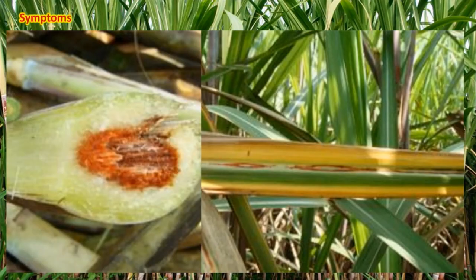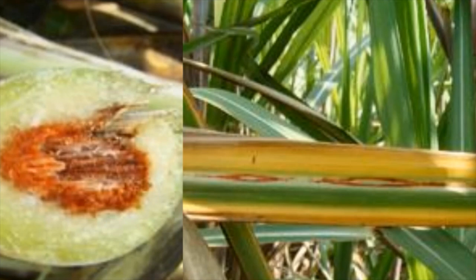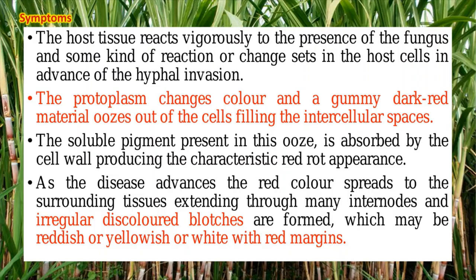When you take a transverse section of the cane, the central vascular region has turned red in color. On the right hand side, you can see the acervuli — elliptical elongated structures in which the conidia are produced. Acervuli are the main symptoms that appear on the leaves and leaf sheaths. The protoplasm of the sugarcane turns red and gummy, oozes out, and enters the intercellular spaces, causing the reddening. Irregular discolored blotches are also seen in the internodal regions, with reddish, yellowish, or white margins on the leaves and leaf bases.